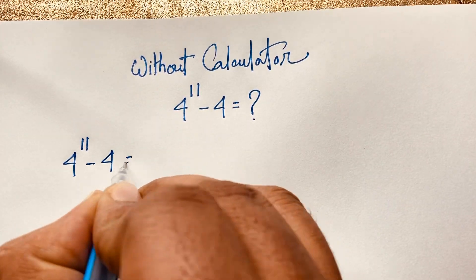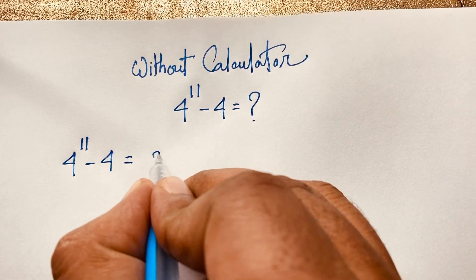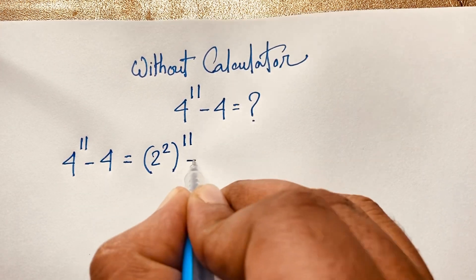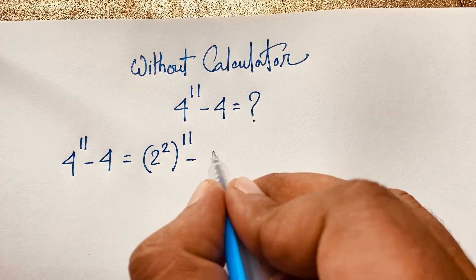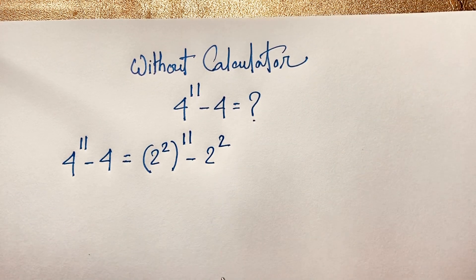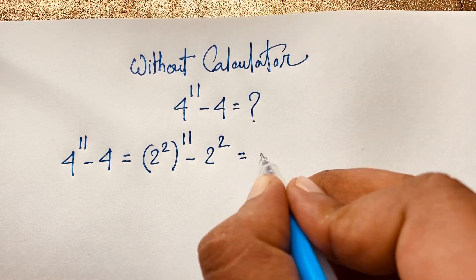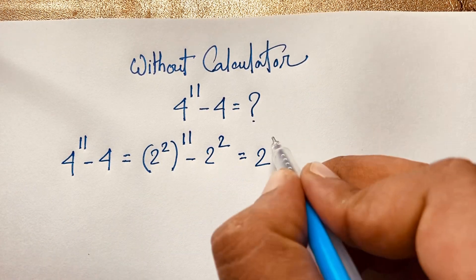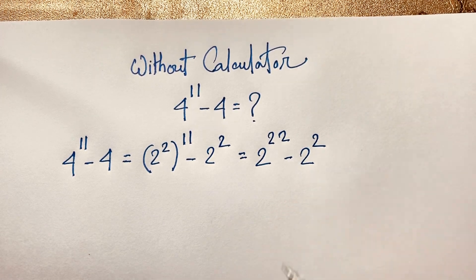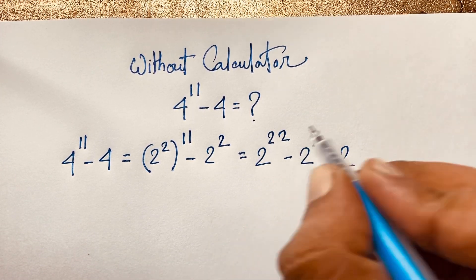So I take our question: 4^11 minus 4. At this moment I can write 4 as 2 to the power 2, whole to the power 11, minus 4, and similarly 4 as 2 to the power 2. Now I can simplify: 2 to the power 2 times 11 will be 22, and here is 2 to the power 2. So we have 2 to the power 22 minus 2 to the power 2.